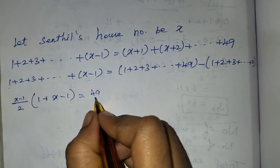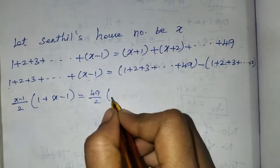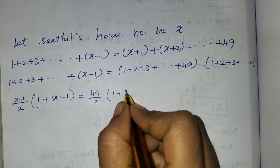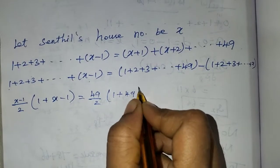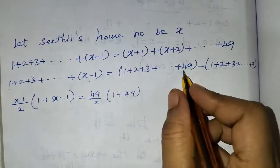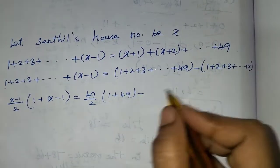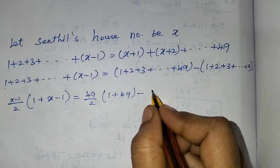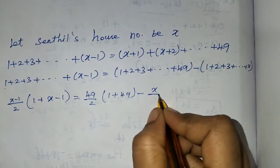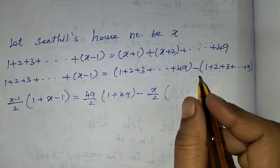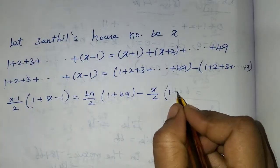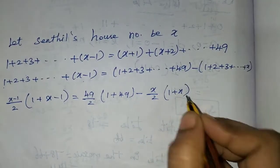Applying the formula n by 2 into (a plus L) for both sides. For the right side, n equals x, so it becomes x divided by 2 times (a plus L), where a equals x plus 1 and L equals 49.